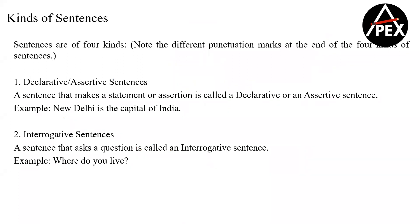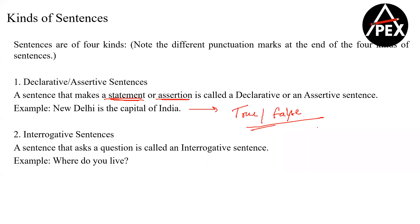I want you to carefully note the punctuation marks at the end of all these four types of sentences. The first type is a declarative or assertive sentence — a sentence that makes a statement or assertion. If I make any statement, whether it is a positive/true statement or a negative/false statement, it will be an assertive sentence.